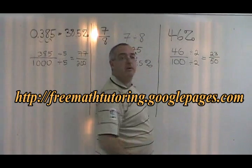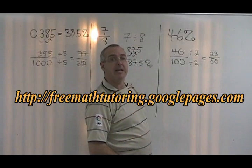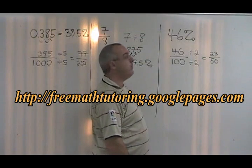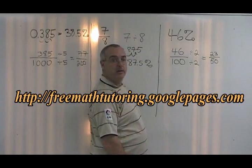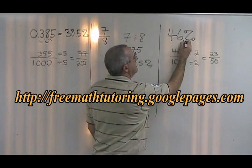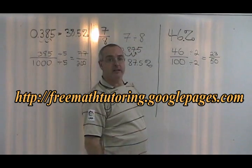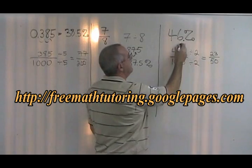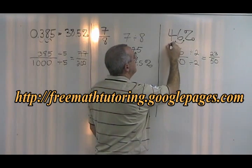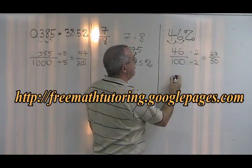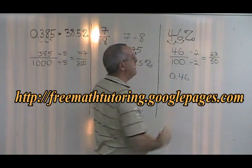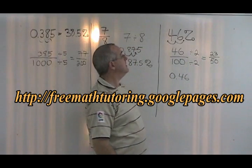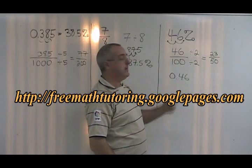To convert 46% to a decimal, we have to realize that there is a decimal right here after the 6. And we move that decimal two spaces to the left. We end up with 0.46. We take away the percentage sign because this is no longer a percent. It is now a decimal.